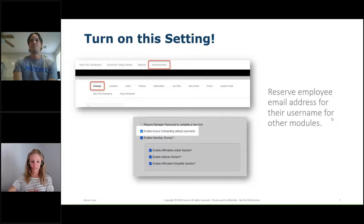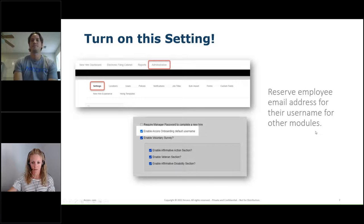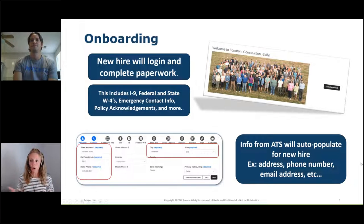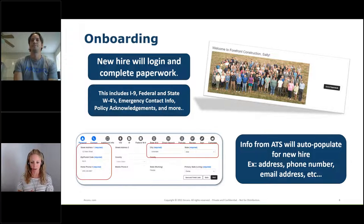Once we have that new hire passed over from ATS, they're now our employee. They're going to log in and complete their paperwork — from their I-9 to their federal and state W-4s, emergency contact info, signing off on policy acknowledgments, all those things we gather from new hires. Also note that information from the applicant tracking system — things like address, personal email address, and phone number — will automatically transfer over into the onboarding system.